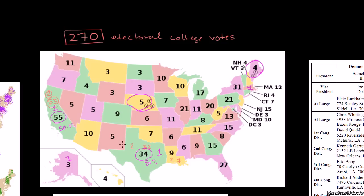One other twist: the District of Columbia — Washington DC — gets no representatives in Congress; they have no senators and no representatives. But they do get three electoral votes when it comes to deciding who is going to be president.